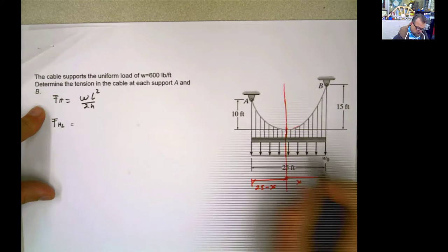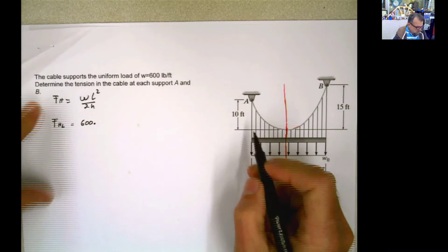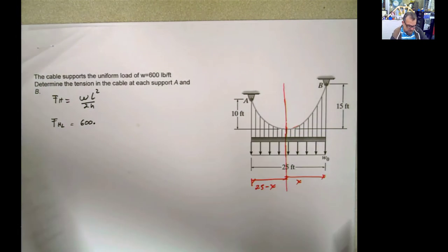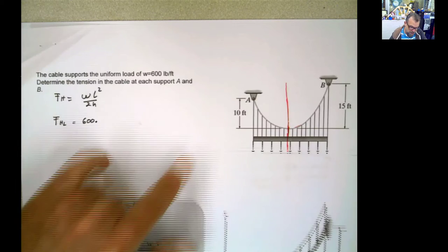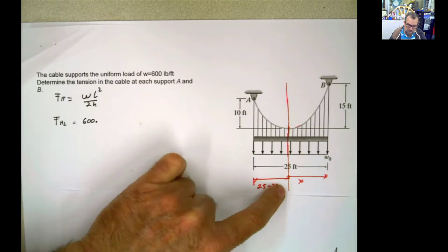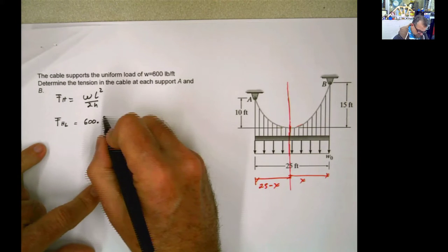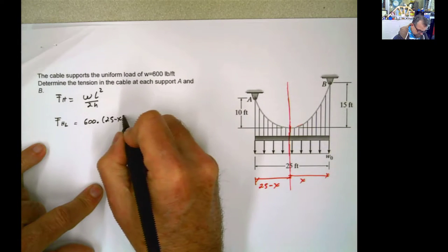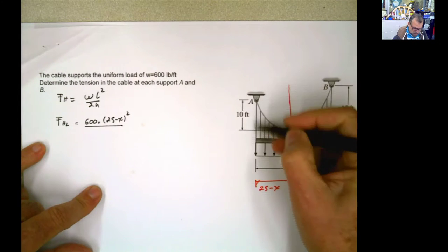And we have a formula here for FH. So let's copy that formula. FH equals w*l² divided by 2h in this side. Once we have that formula, and we know that the left and the right are the same, I can say that the horizontal force applied to the left diagram is going to be w₀, 600, 600 times l. Once again, l, this is l. For our case, this is l, 25 minus x, 25 minus x squared divided by 2 times the sagging, 2 times 10.